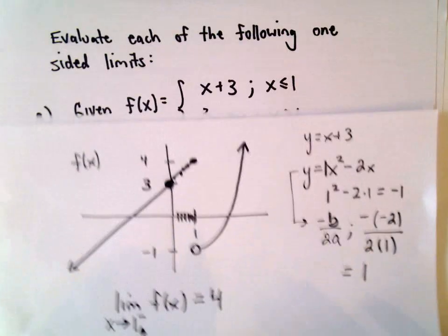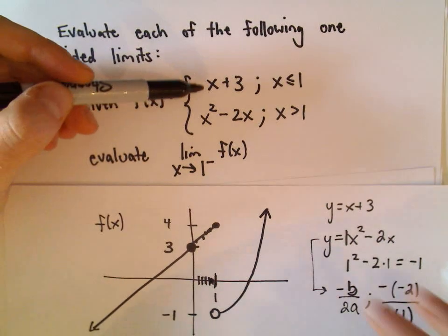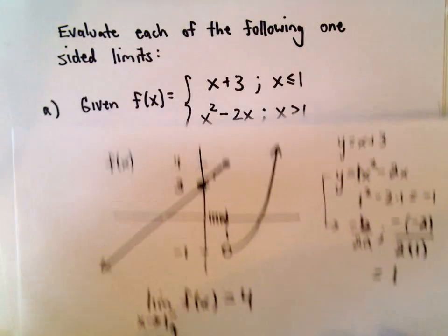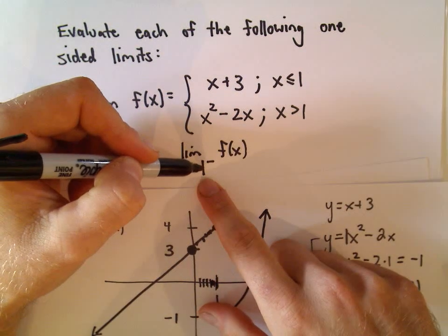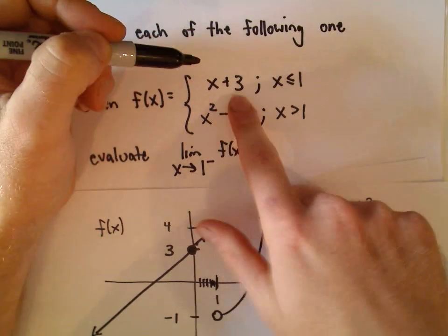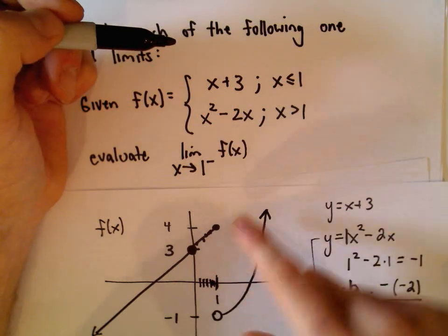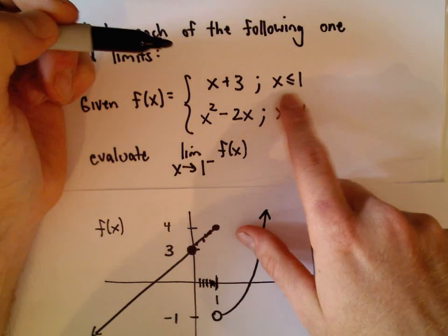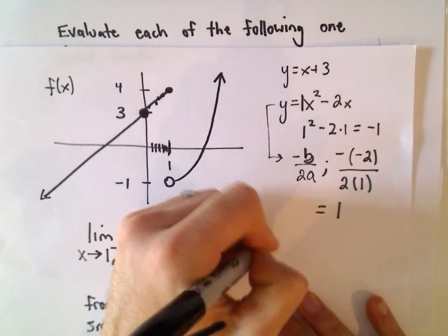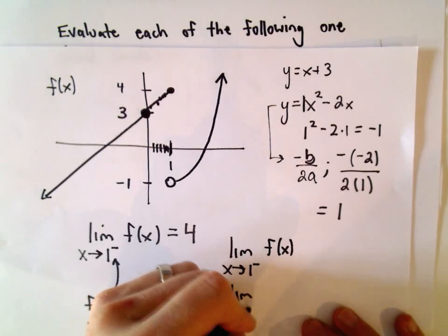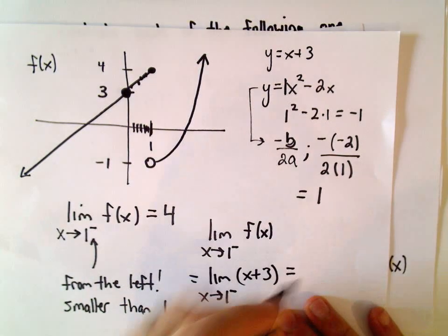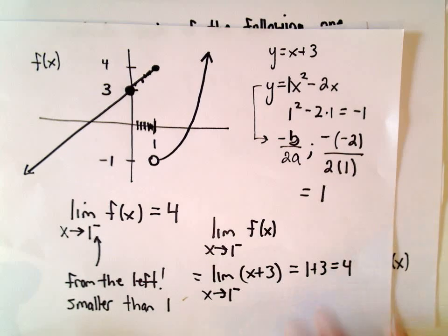Algebraically, what I would do: as we said in the previous video, if your functions are continuous at the point you can just plug it in. This isn't quite continuous at x equals 1 because it breaks, but you can still basically plug it in. For 1 from the left — numbers a little bit smaller than 1 — that corresponds to x less than or equal to 1, so I should use the first formula, x plus 3. So the limit as x approaches 1 from the left equals the limit of x plus 3, which gives 1 plus 3, or 4.